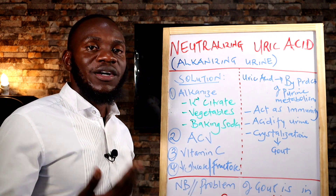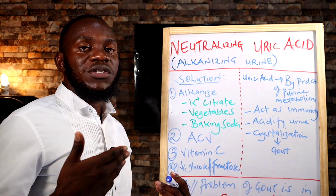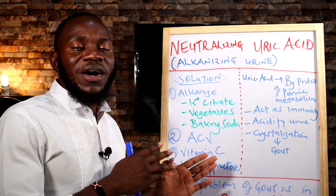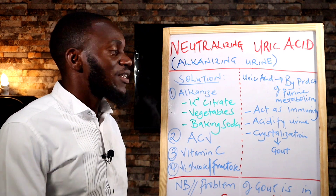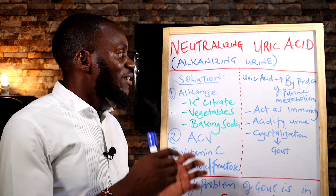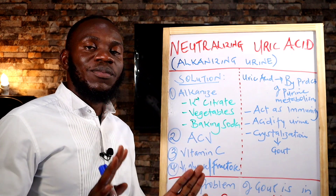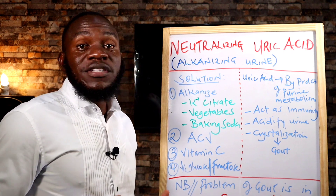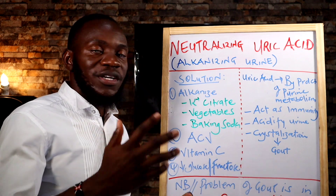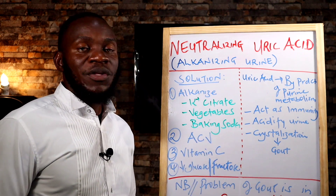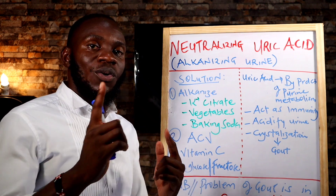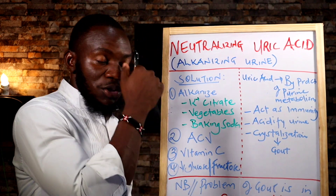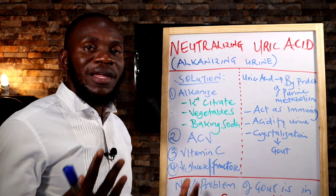An increase in uric acid means you're breaking down too much protein. Uric acid also makes your urine highly acidic. Now, uric acid accumulation is not simply a problem of dietary protein intake — because most times when you're fasting, there's actually an increase in uric acid in your system. Even without eating proteins you'll still have elevated uric acid, because uric acid plays an important role as an antioxidant and boosts immunity.